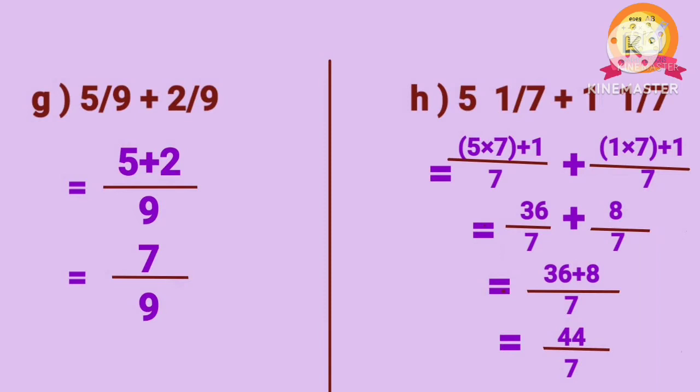Problem H: 5 1 by 7 plus 1 1 by 7. After converting the mixed fractions into improper fractions, we get 36 by 7 plus 8 by 7. After adding, we get 44 by 7.